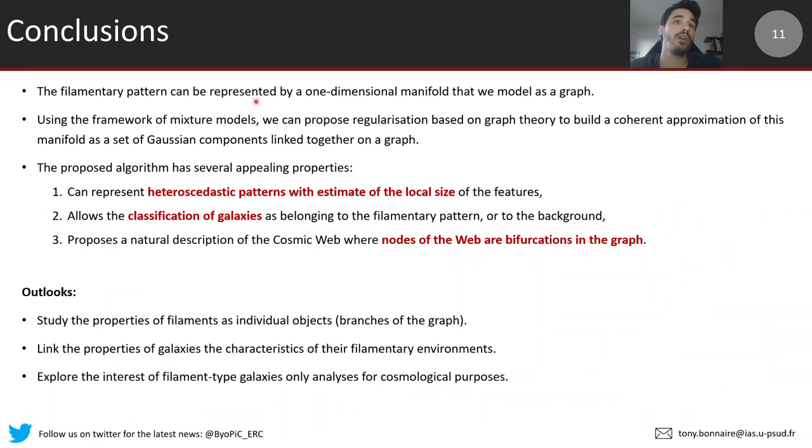In conclusion, we've introduced a new way to characterize the filamentary pattern of the cosmic web using a regularized version of the mixture model with a graph prior. It has appealing properties: it can handle heteroscedastic patterns and give an idea of the local size of the features, it can classify galaxies as belonging to filament-type patterns or individual filaments or the background, and you can use the output to do physics with the bifurcations, identify nodes and look at connectivity. I would like to study the individual characteristics of filaments and look at how they connect with the properties of galaxies. If you have questions or suggestions, let me know and I would be glad to answer you.